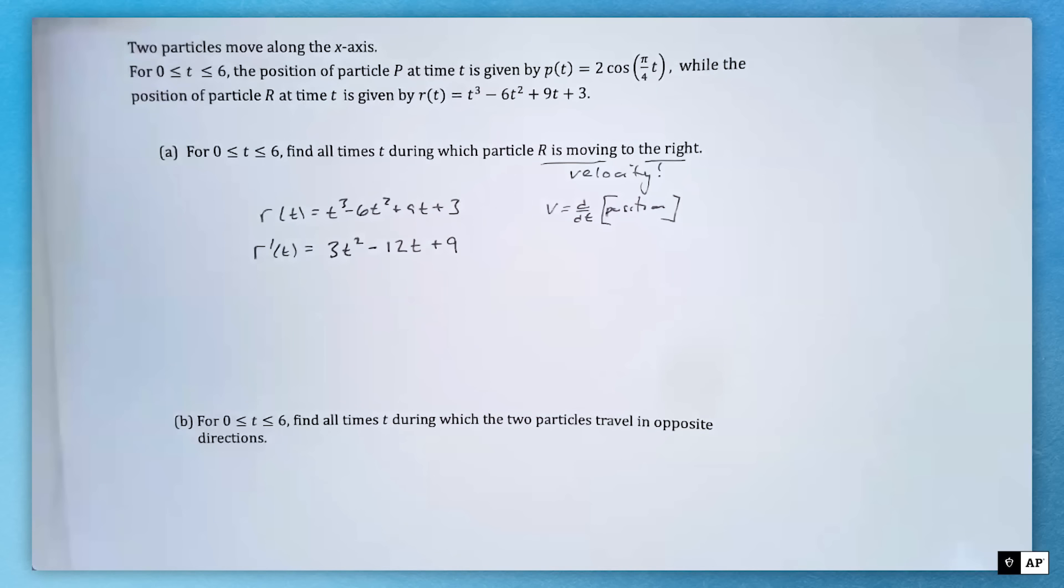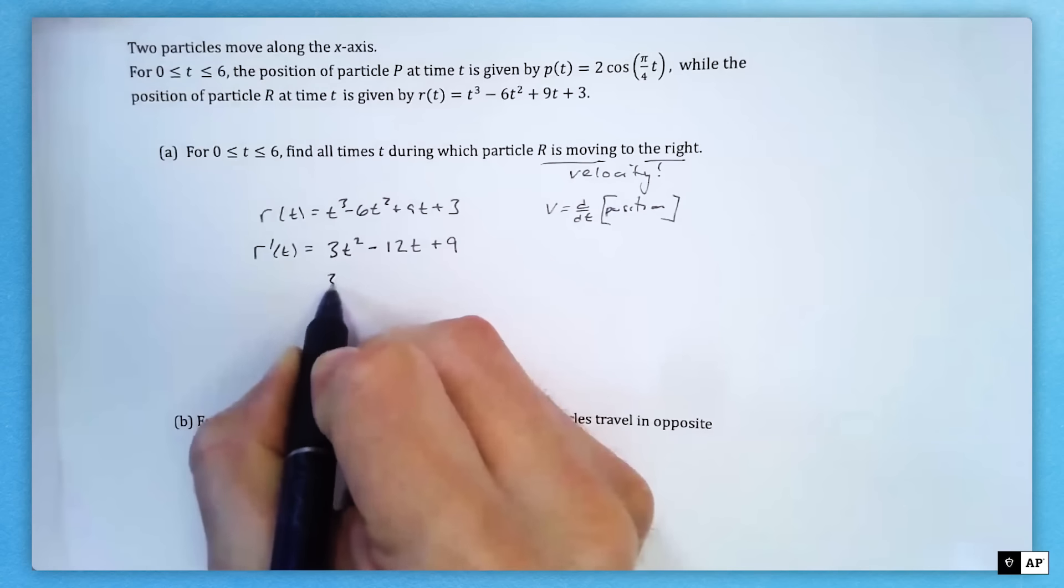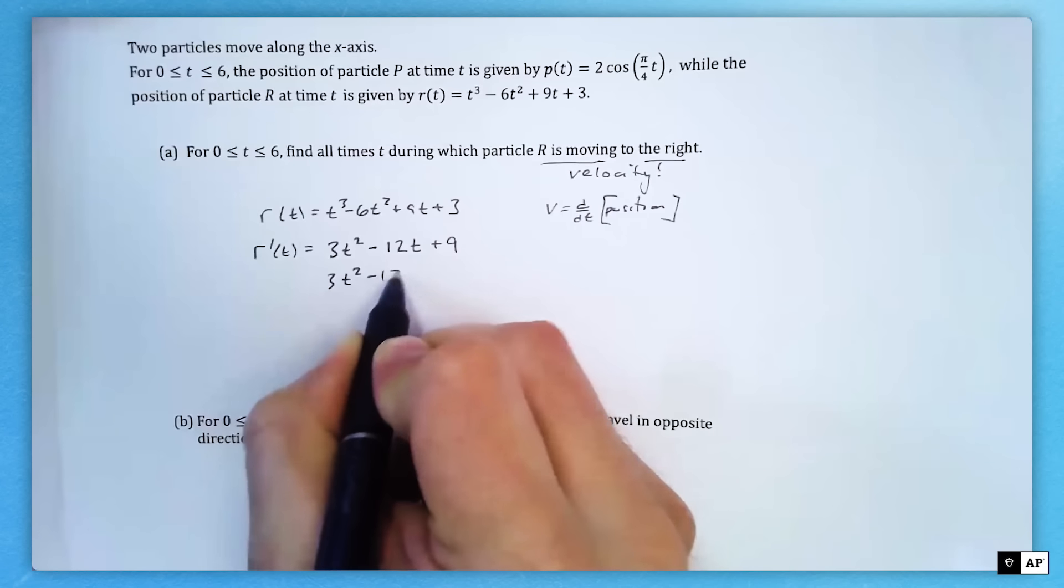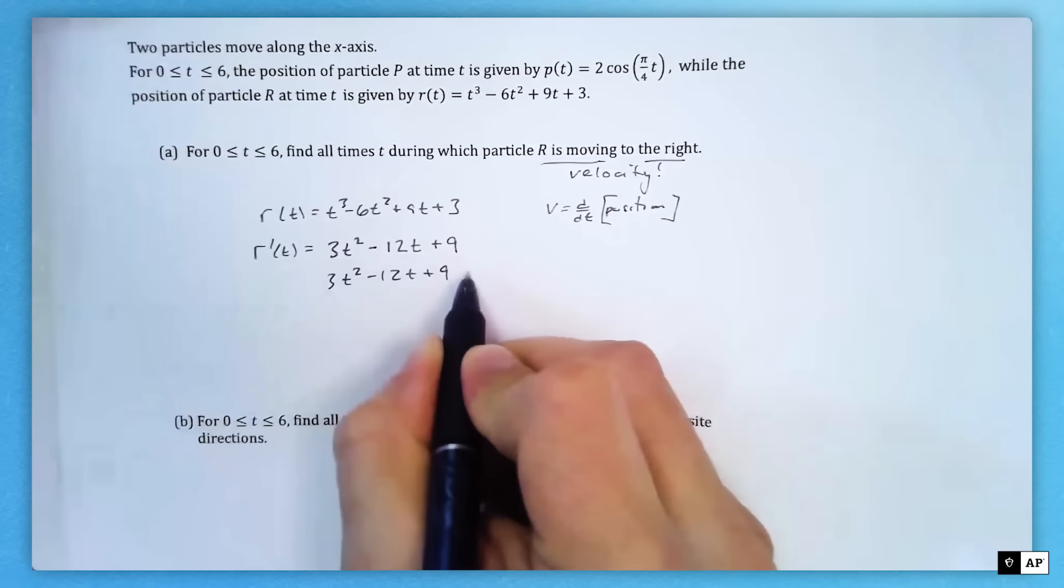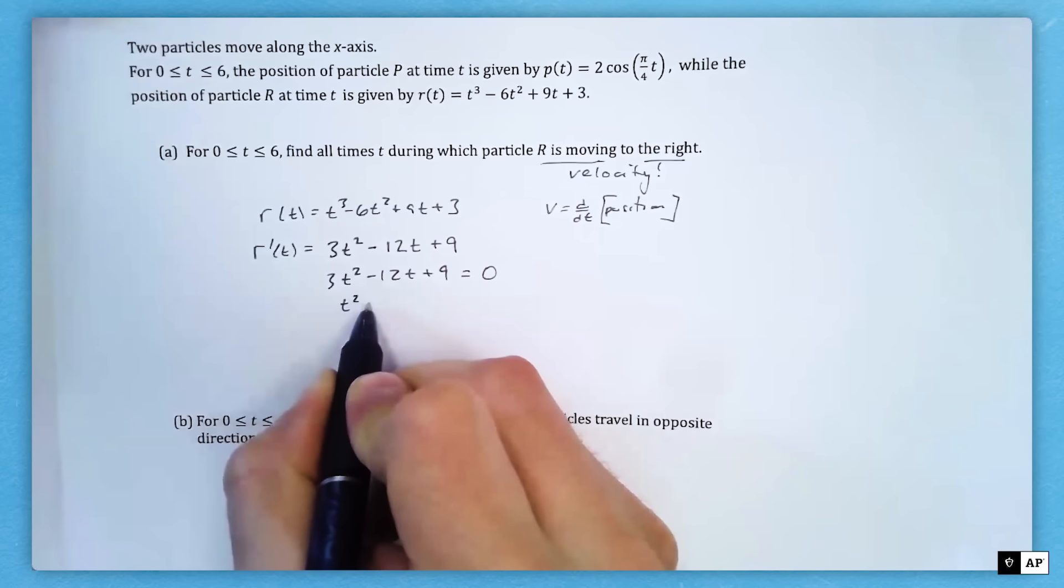Then the derivative of 3 is zero. We want to know where it's moving right. We need to find where it's moving right and where it's moving left. I'm going to set my derivative equal to zero to find out where our potential places it changes direction. I'm going to factor a 3 out.